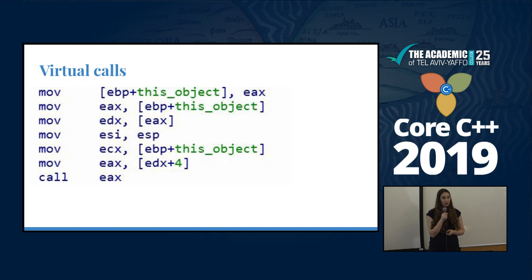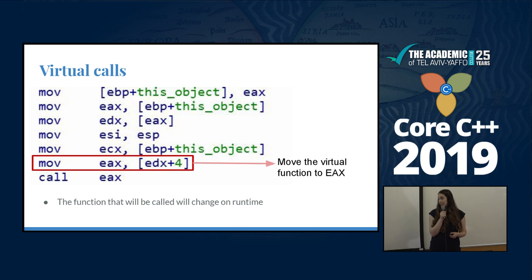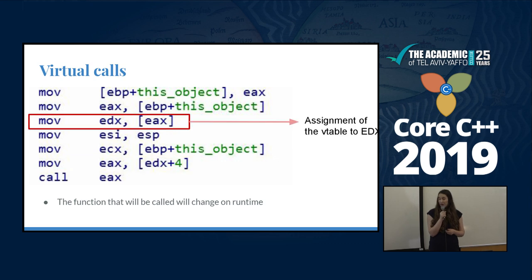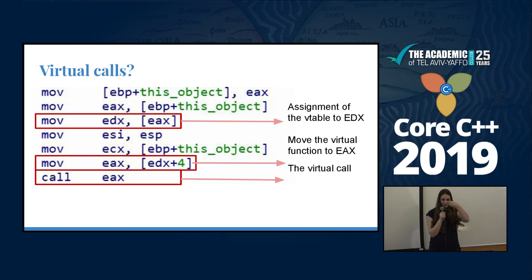Virtual calls are a main concern for reverse engineers working with C++. As you can see, a virtual call involves a register and a call to that register — I cannot know the address, I cannot know what it calls, just that it's a virtual call being made. The virtual function is moved to EAX, which is afterward called. Before that, you have the Vtable pointer moved to EDX, so EAX has the function from the virtual table and the virtual table pointer is assigned to EDX before.